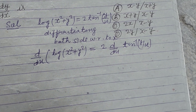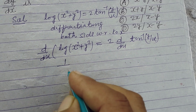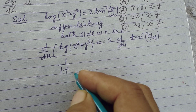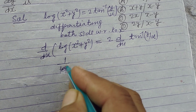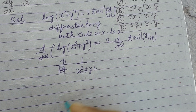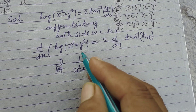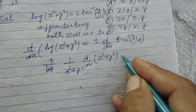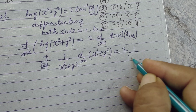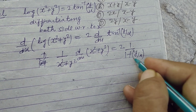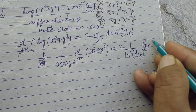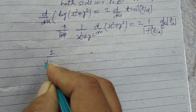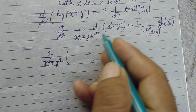We take 2 outside. Differentiation of log x is 1/x, so this becomes 1/(x² + y²) times d/dx(x² + y²). Differentiation of tan⁻¹(x) is 1/(1 + x²), so the right side is 1/(y² + x²) times d/dx(y/x).